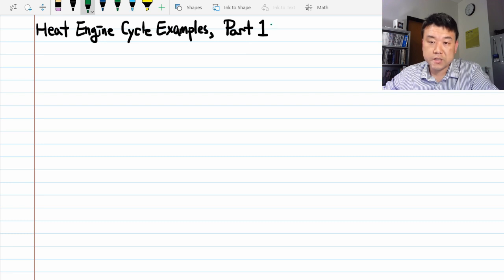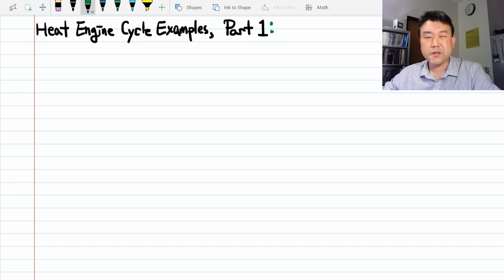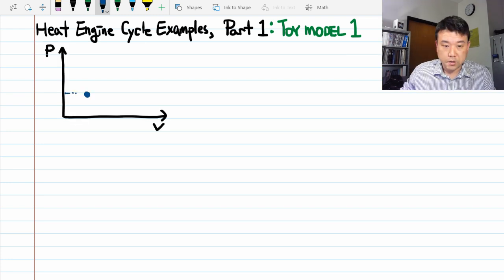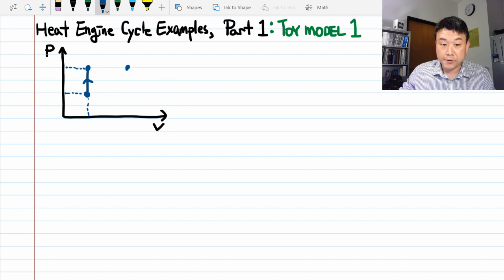We are going to use a simple cycle so that we can illustrate the approach rather than trying to calculate for a realistic heat engine cycle. So let me draw the pressure volume diagram for this toy model cycle. This would be the point for the low pressure, low volume. High pressure and low volume. High pressure and high volume. And high volume, low pressure.